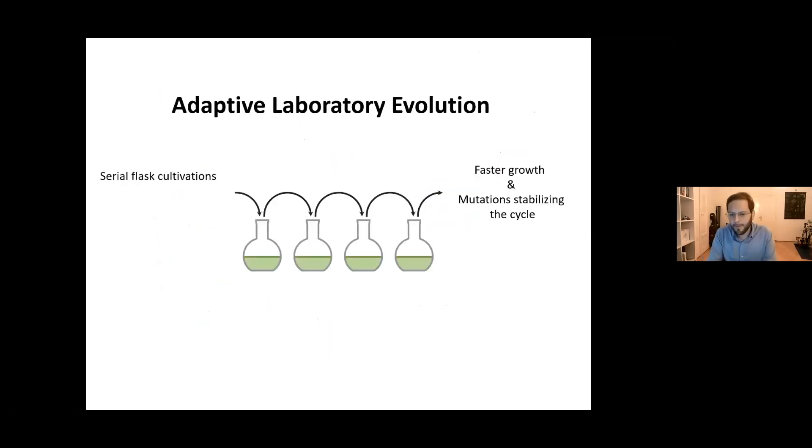We further used a method called adaptive laboratory evolution that relies on natural selection and evolution. Clearly, one of the most powerful methods that we have in synthetic biology, but also not as well known as the famous CRISPR-Cas9 system.